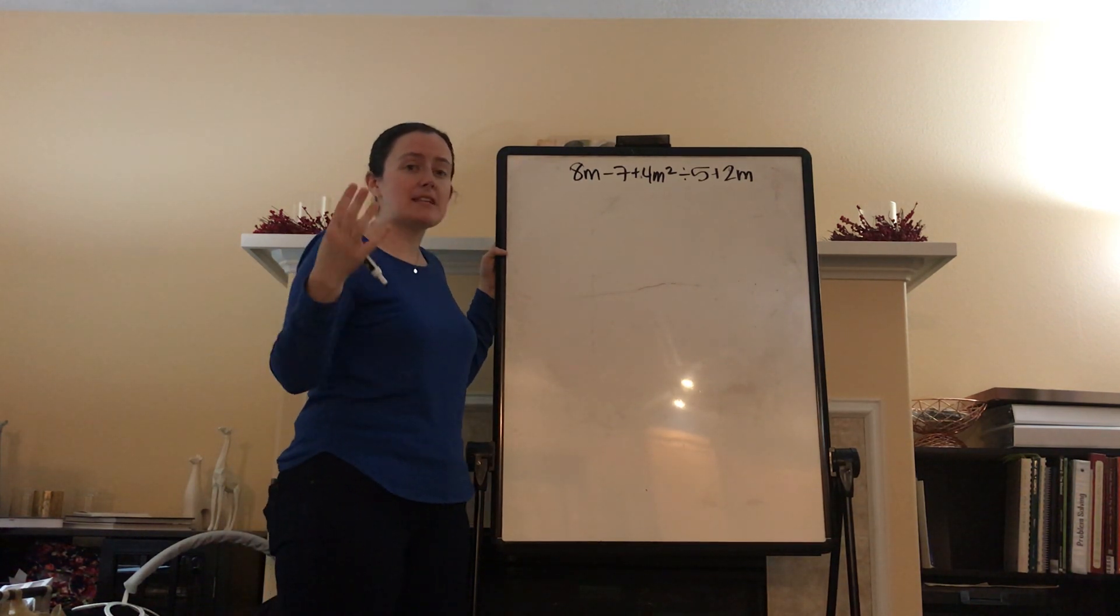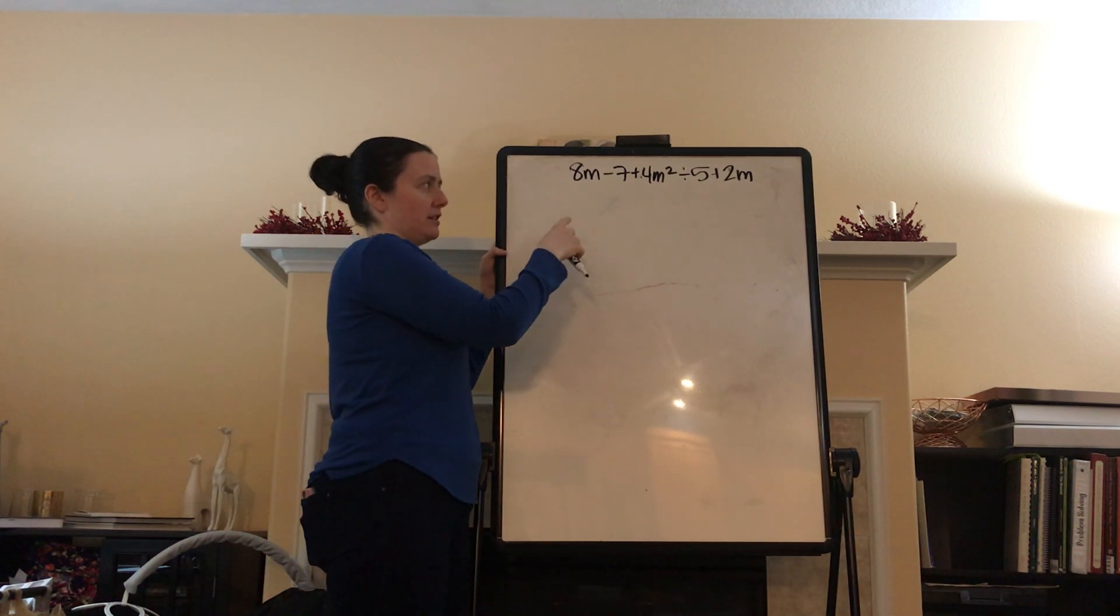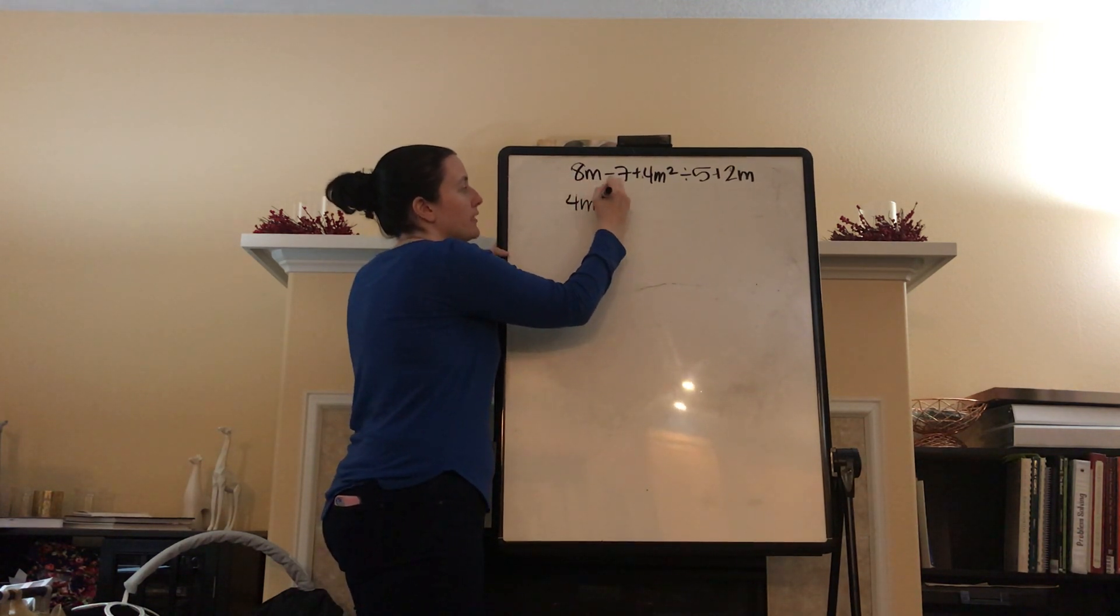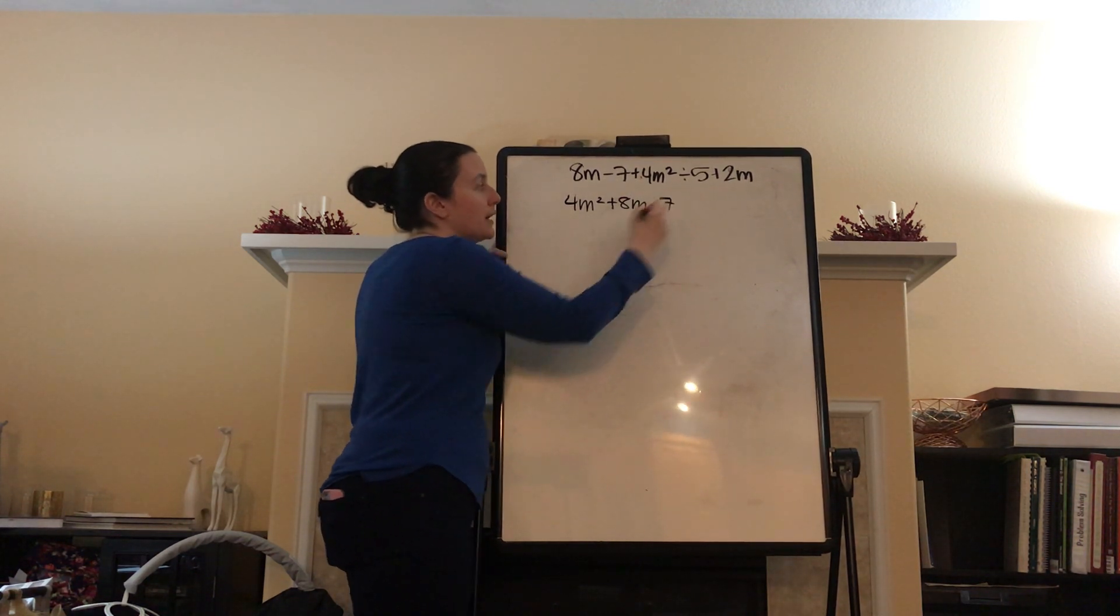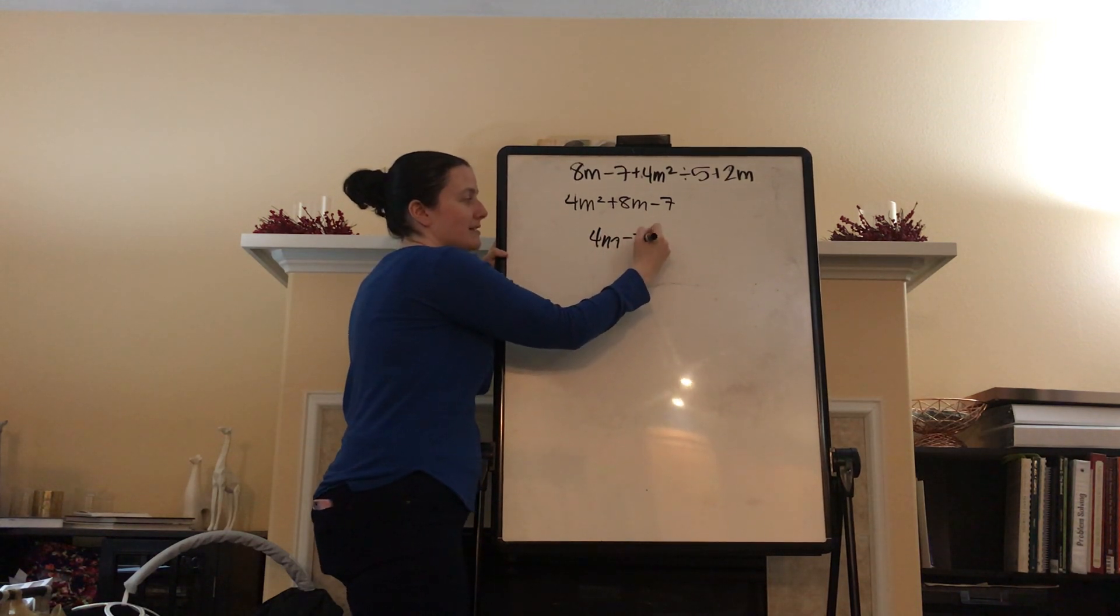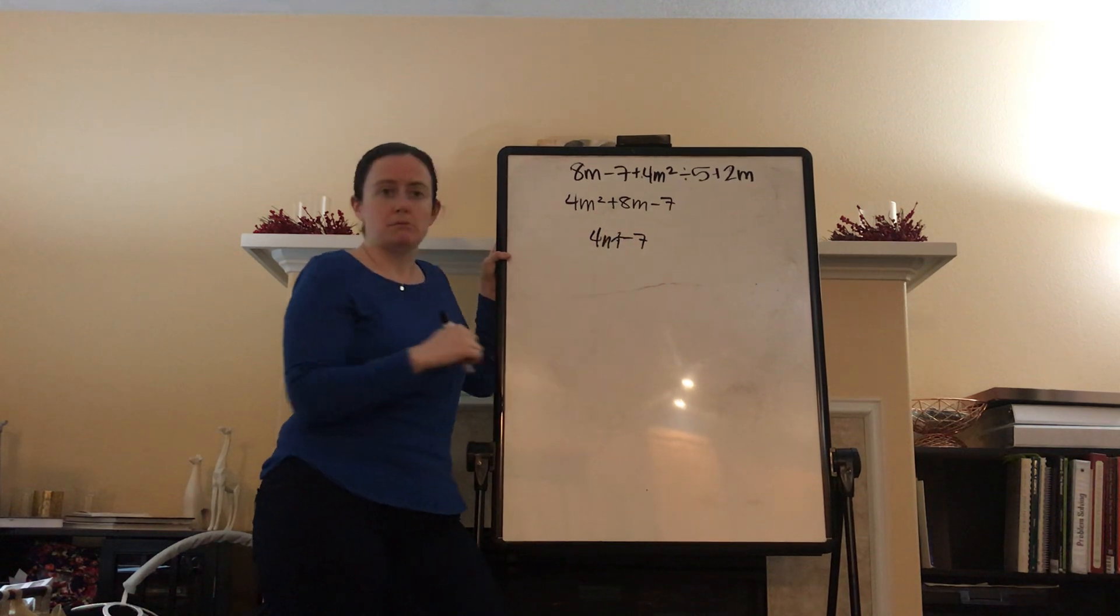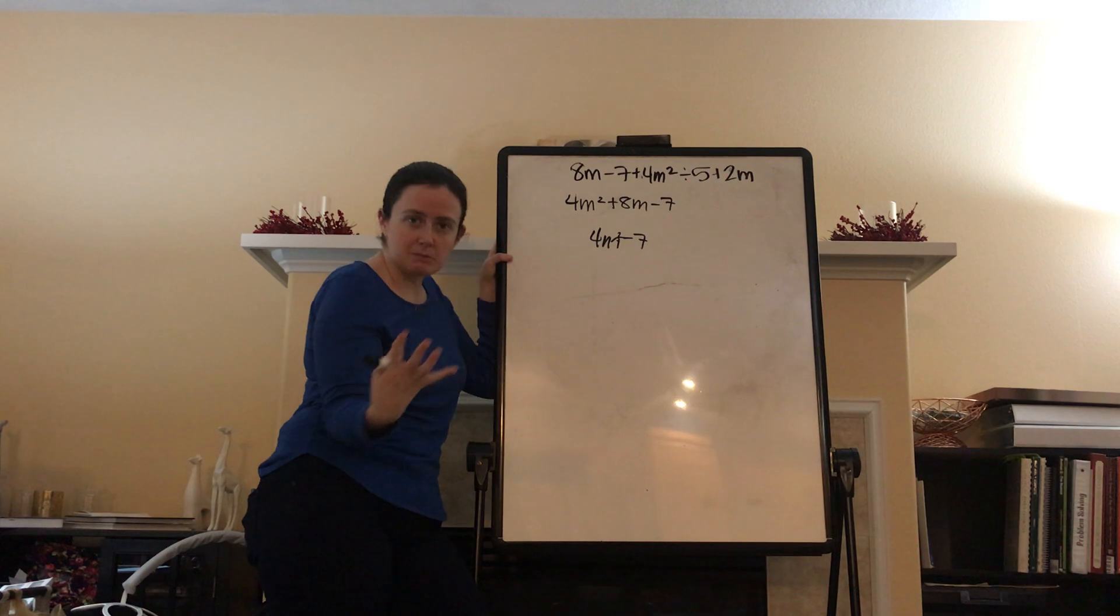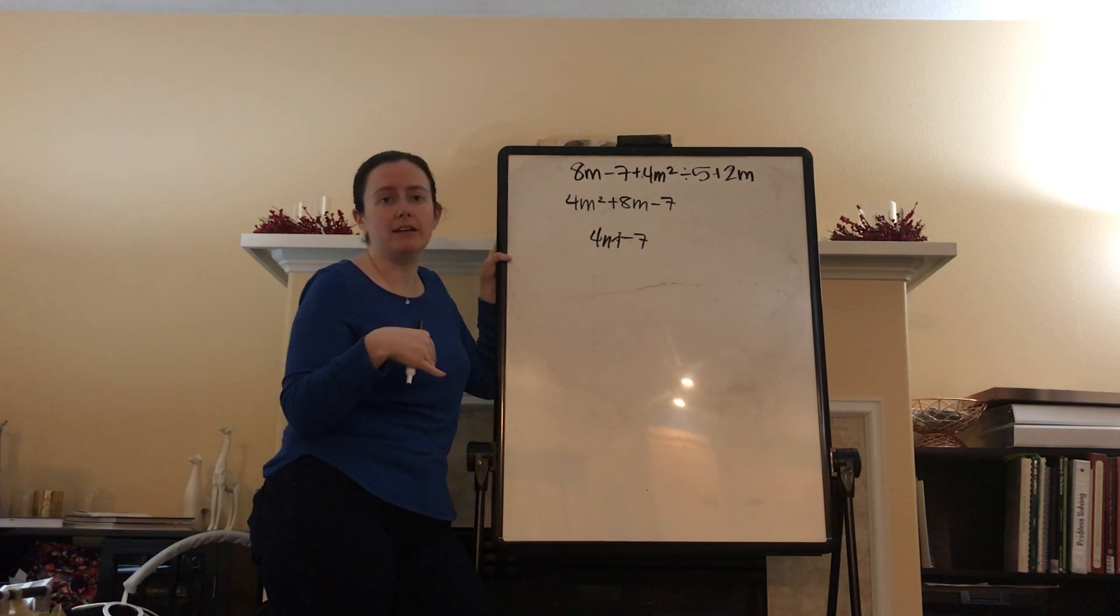And if there's any missing terms, they need to be filled in. So, what does that mean? There's not any missing terms in ours. Ours is going to be 4m squared, and then plus the 8m, and then minus the 7. What I'm talking about is, what if this had only been 4m squared minus 7? Well, it goes from a degree of 2 to a degree of 0. What are we missing? A degree of 1. If it's missing, you need to put it in.